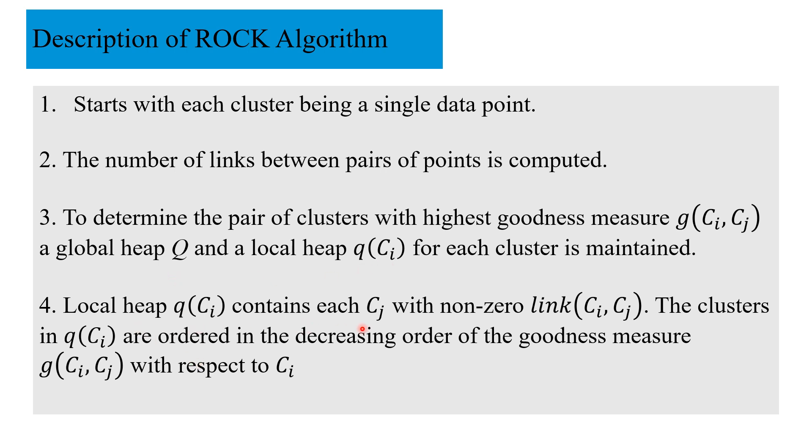Q(ci) for each cluster and a global heap for all the clusters. The local heap contains, for Ci, each Cj with nonzero link, which means there are at least one common neighbor.